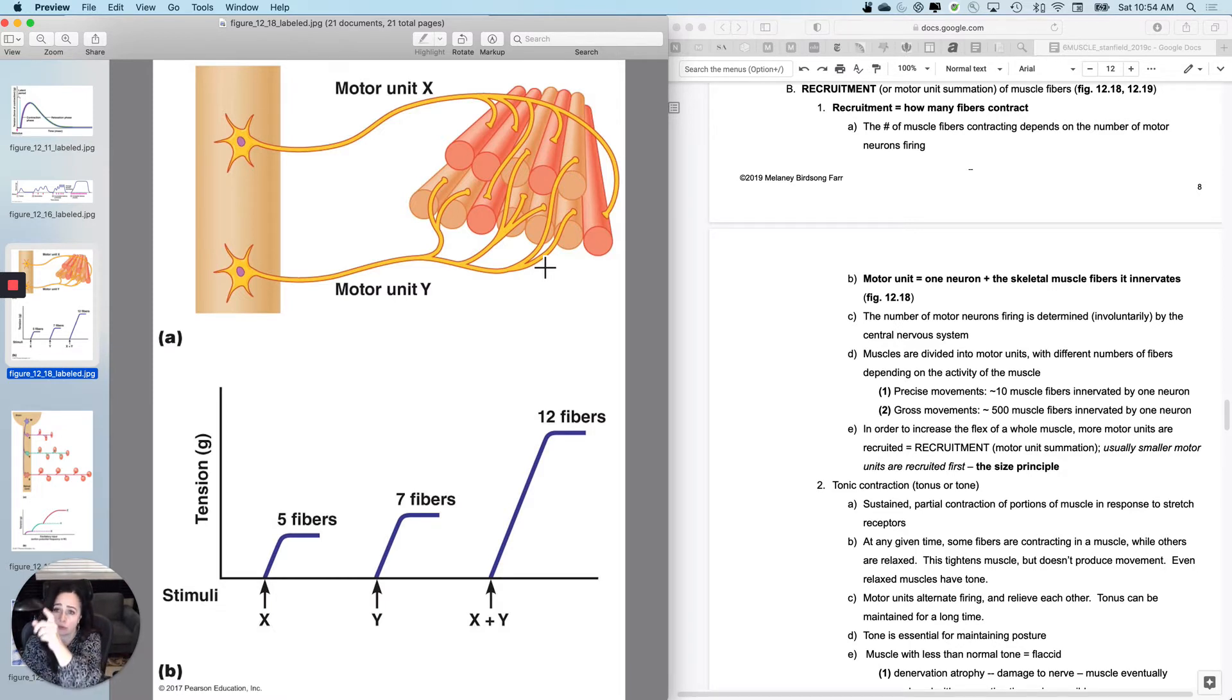The number of motor neurons that are firing or sending an action potential is determined mostly involuntarily by the central nervous system. Like if I try to pick up a coffee cup, my brain has had experience with how much tension it takes to pick up a coffee cup successfully. And so subconsciously, my brain is going to predict how many motor units are necessary to do that. I think I'm going to need X number of motor units and try that. If the coffee cup was heavier than I expected it to be, then my brain would continue to recruit more motor units until I either picked up the coffee cup or realized that I wasn't capable of picking up the coffee cup.